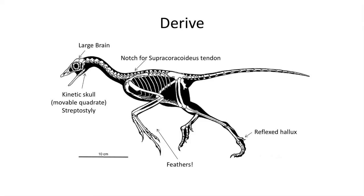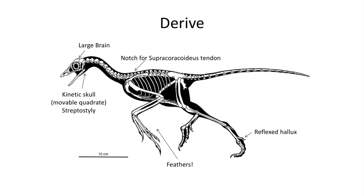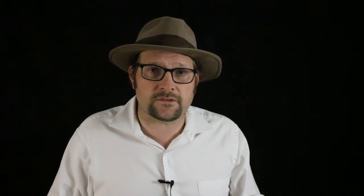The braincase is also expanded to accommodate a large brain, and a larger brain was needed to navigate the complex three dimensions required in flight. The hallux in the foot is reflected back, which is found in many birds, with the toes mainly supported by the three digits out front.